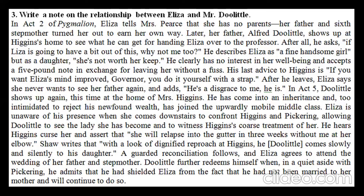Question 3: Write a note on the relationship between Eliza and Mr. Doolittle. In Act 2 of Pygmalion, Eliza tells Mrs. Piers that she has no parents — her father and sixth stepmother turned her out to earn her own way. Later, her father Alfred Doolittle shows up at Mr. Higgins' home to see what he can get from handing Eliza over to the professor. He asks: if Eliza is going to have a bit out of this, why not me too? He describes Eliza as a fine, handsome girl, but as a daughter she is not worth a keep. He accepts a five-pound note in exchange for leaving without a fuss.